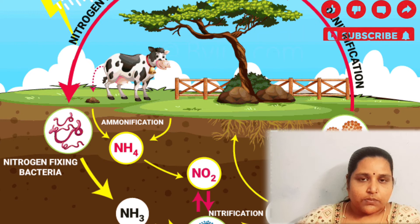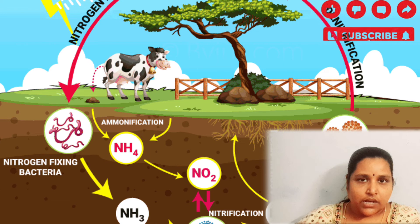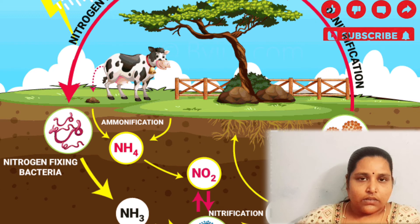There is consumption of oxygen in plants during respiration, consumption of oxygen in animals during respiration, and industries also consume oxygen for working. There is also consumption of oxygen during volcanic activity.